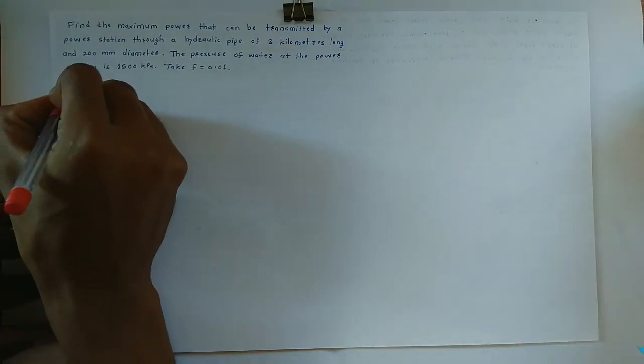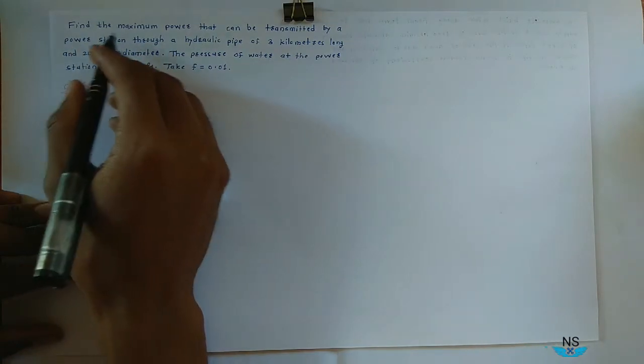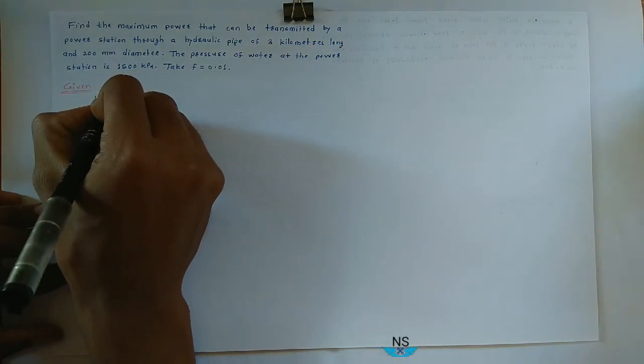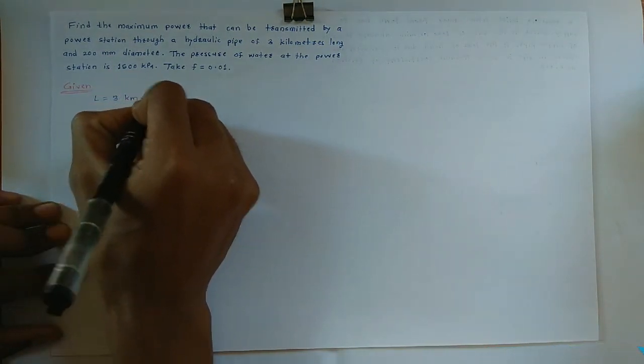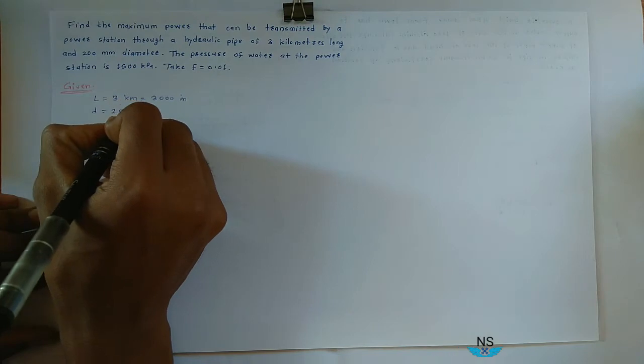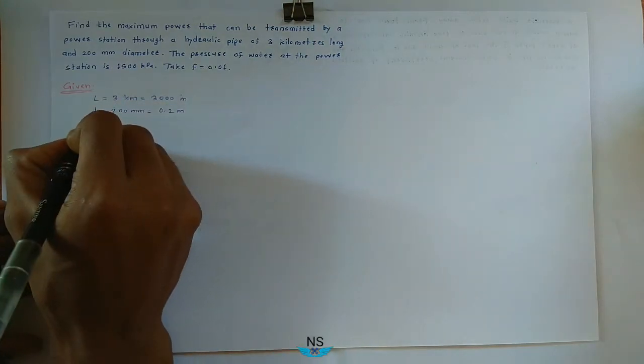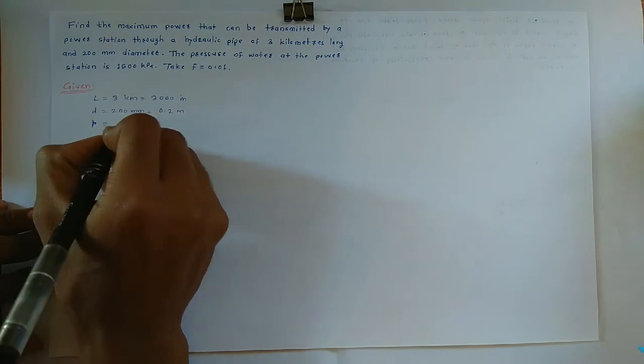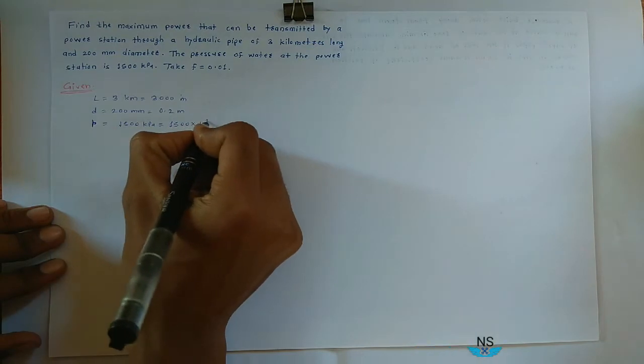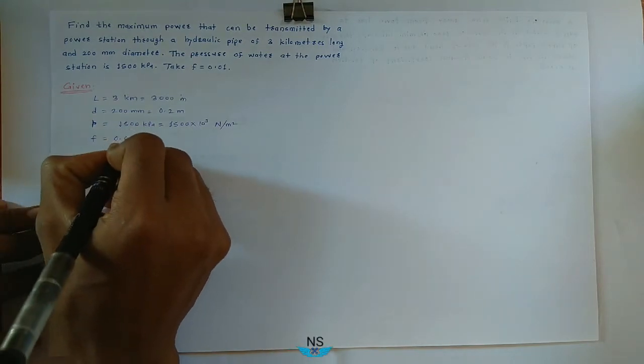So what is given? Given is a hydraulic pipe of length 3 km, that is 3000 meters long, and 200 mm diameter, that is 0.2 meter diameter. The pressure of water at the power station P is 1500 kPa, that is equal to 1500 into 10 raised to 3 pascal, that is newton per meter square. And take f, coefficient of friction, as 0.01.